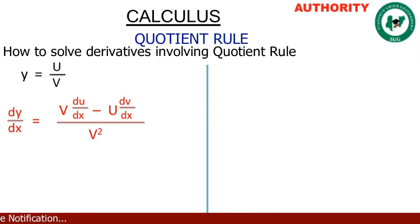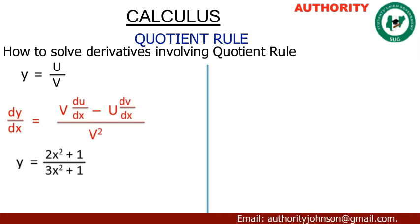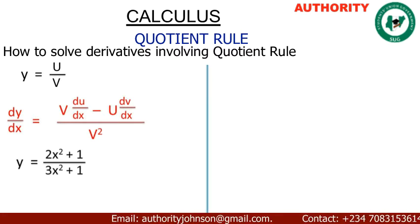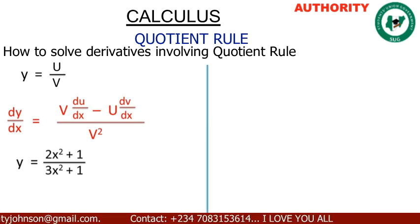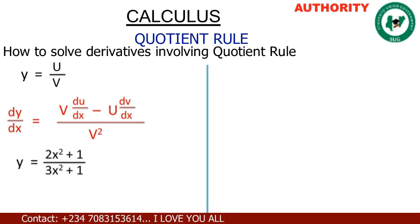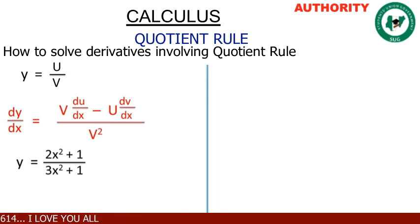Hold that in your memory — dY/dx equals V·dU/dx minus U·dV/dx, all over V squared. Now let's take an example: differentiate Y equals (2s² + 1) over (3s² + 1). We will use 2s² + 1 as our U and 3s² + 1 as our V.